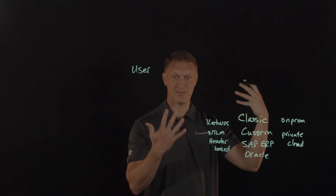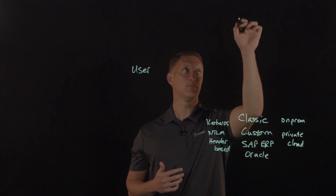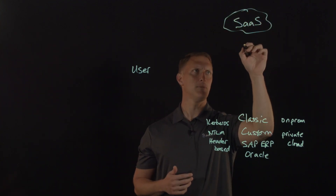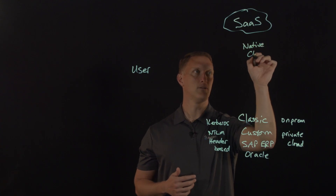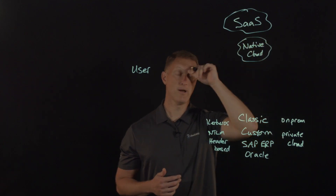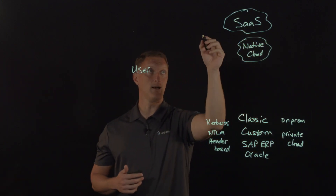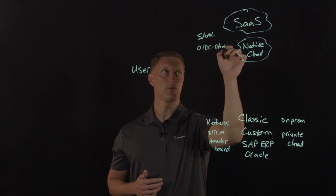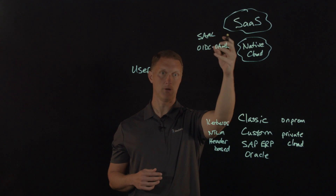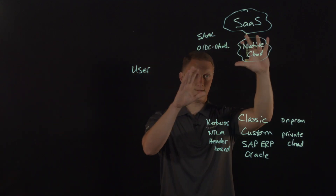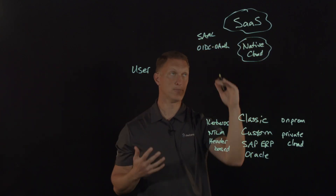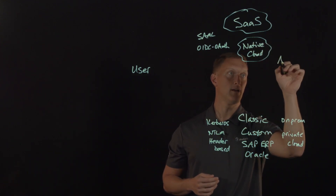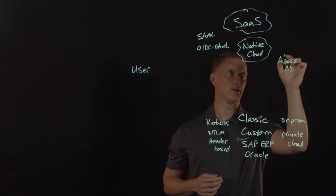But as an organization, in addition to those, you also have more modern applications that are maybe SaaS-based, public cloud. You may also have some native cloud apps. These tend to use things like SAML, and maybe OIDC with some OAuth thrown in there — that's OpenID Connect or Open Authorization. And on these, you also have an identity provider. In the case of SAML, you would have an identity provider and a service provider, like Azure Active Directory, or AAD — that's a cloud-based identity as a service provider.